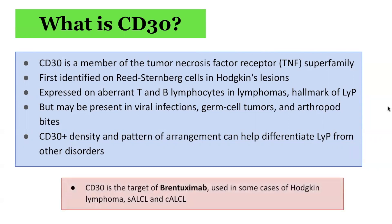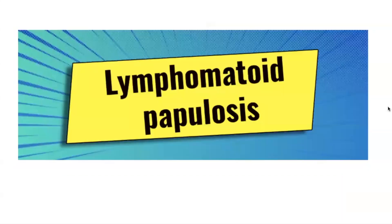Of interest, CD30 is also the target of the brentuximab biologic, which is used in some cases of Hodgkin's lymphoma, systemic anaplastic large cell lymphoma, as well as cutaneous anaplastic large cell lymphoma.